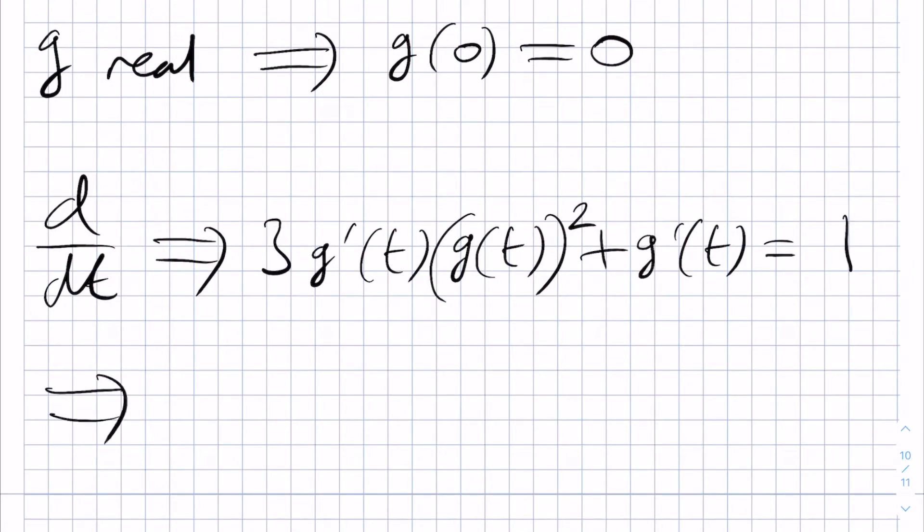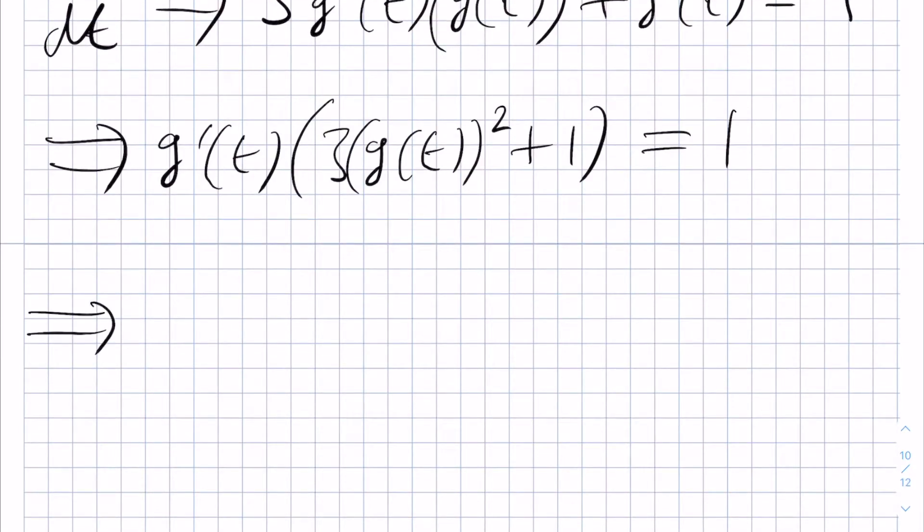Then, we can factorize g prime of t out of the left-hand side, and we have 3g(t) squared plus 1, and then this is equal to 1. Then, we divide to get g prime of t is equal to 1 over 3g(t) squared, and then plus 1.